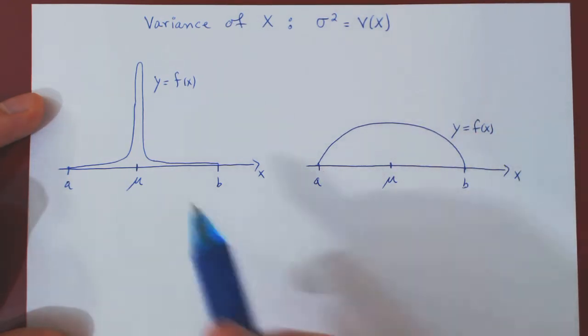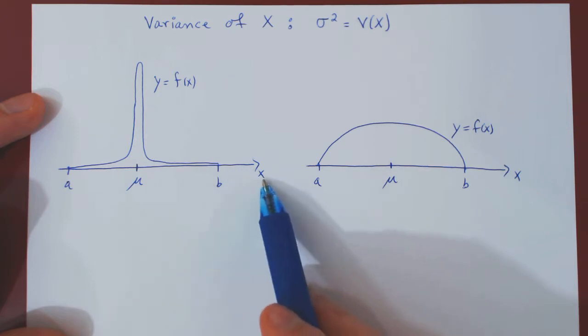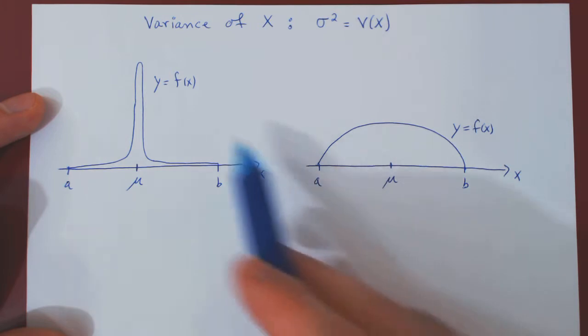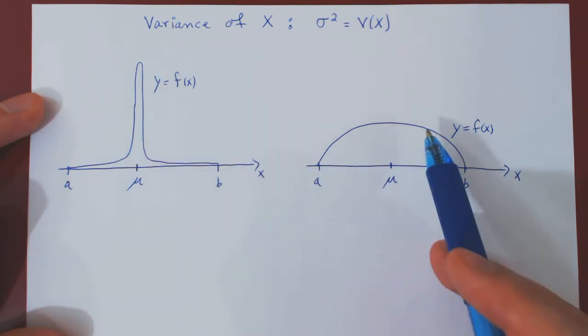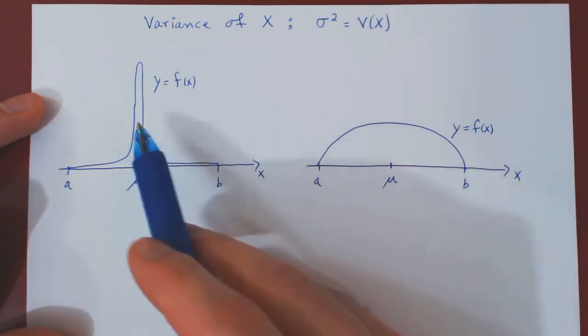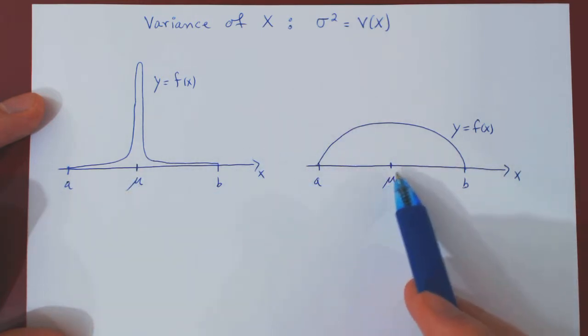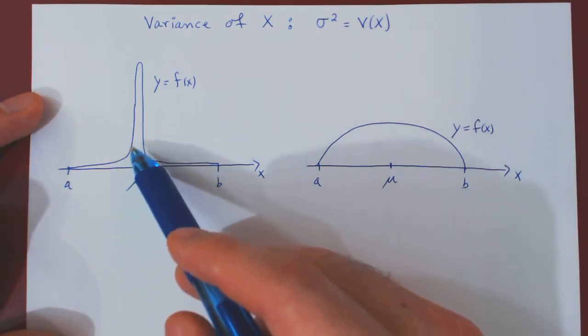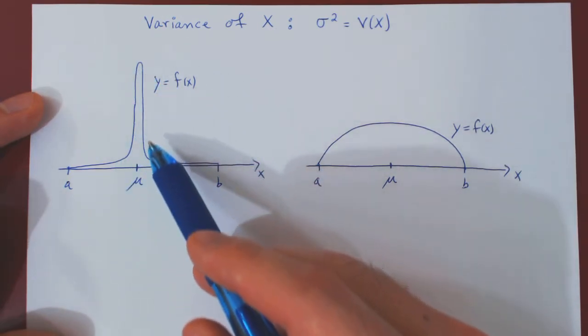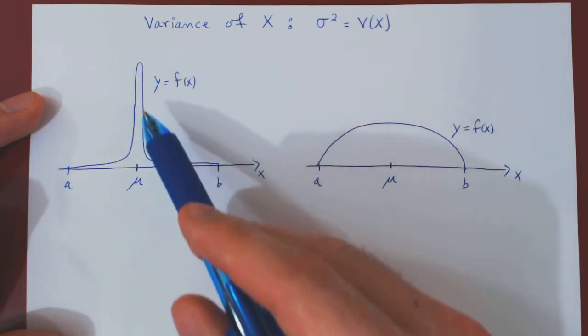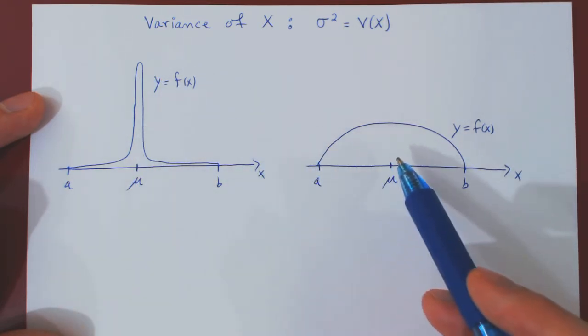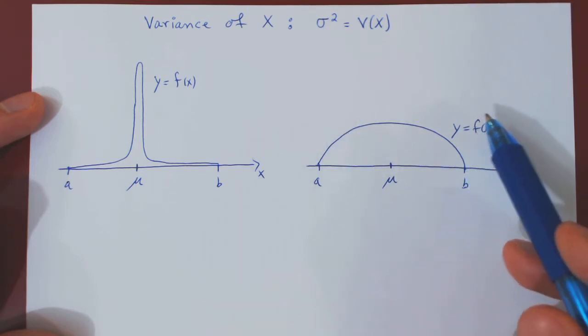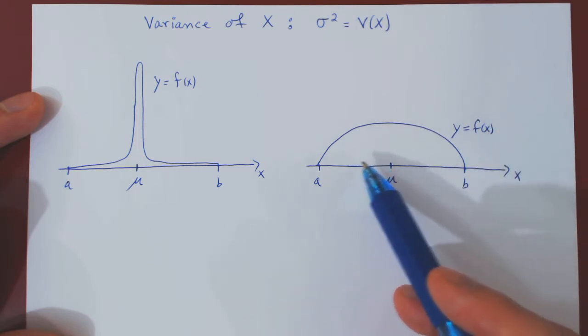So, even though we can assume that we have the same interval for X and the same mean for X, there clearly is something different between the two cases that is not captured by the mean of the random variable X. In the first case, most of the weight, most of the area of the density function is lying around the mean. In the second case, there is a lot of weight, a lot of area underneath the density function that is lying away from the mean.